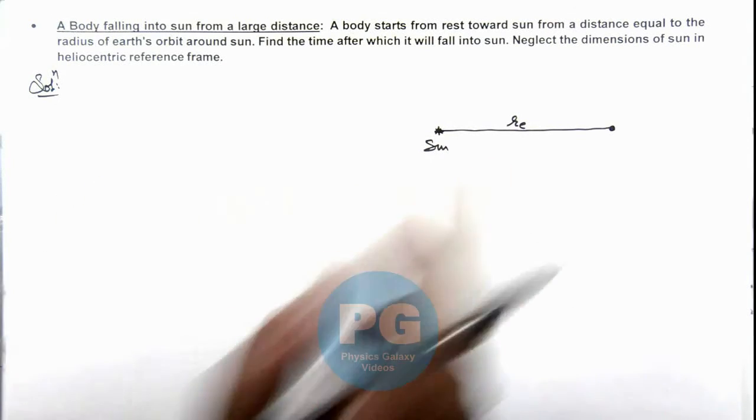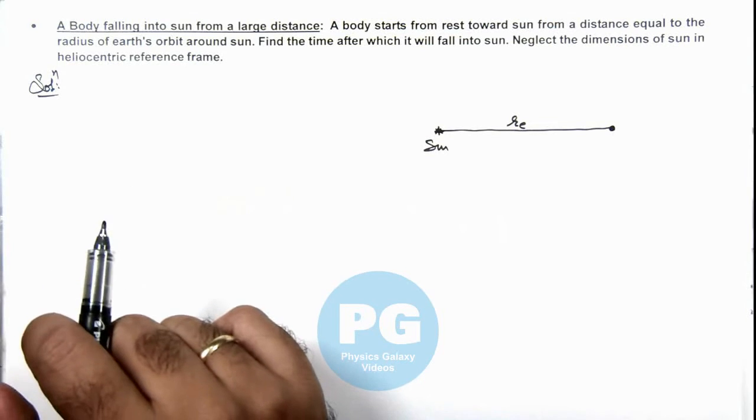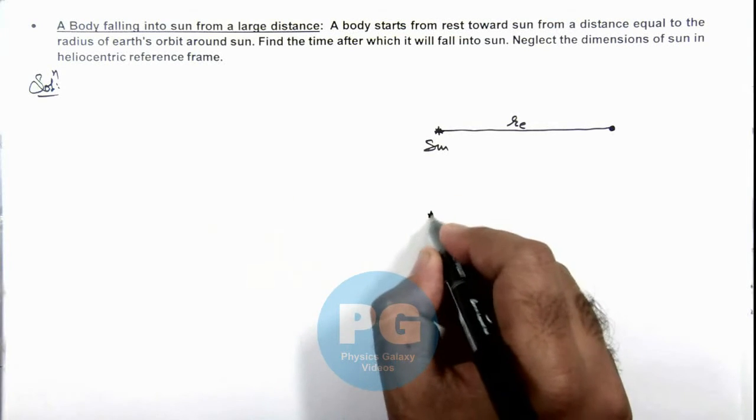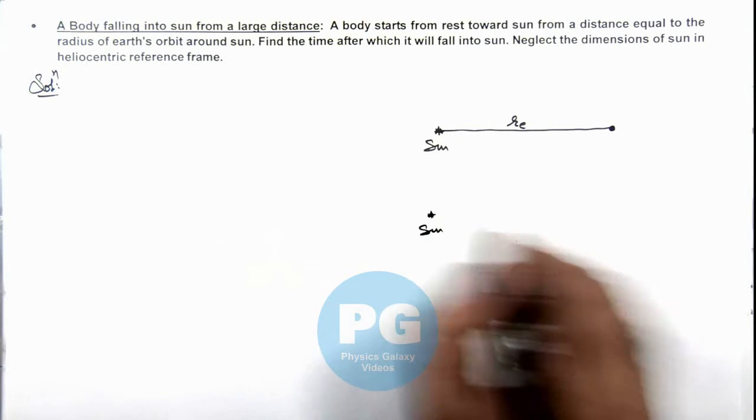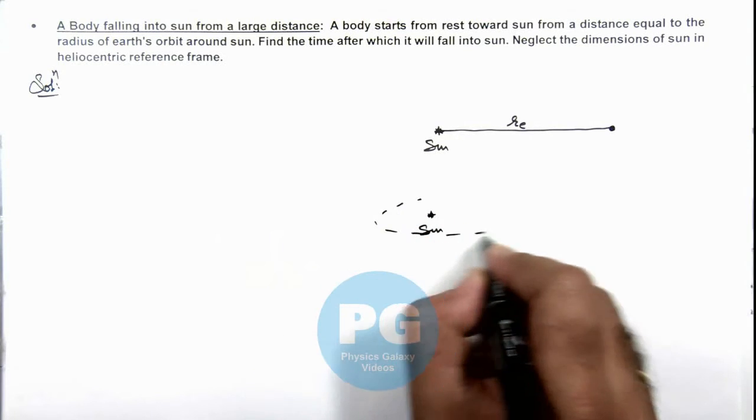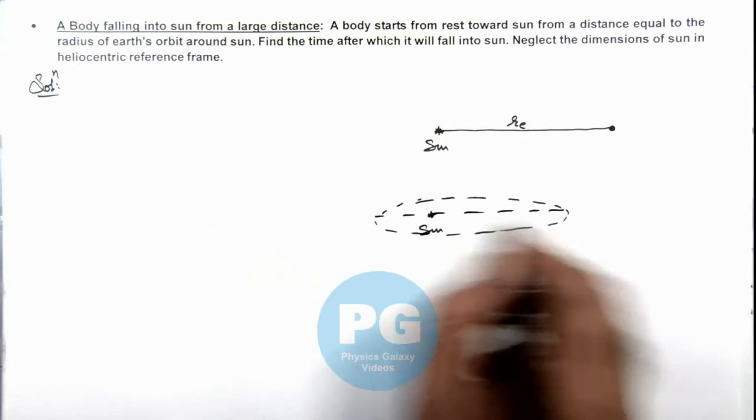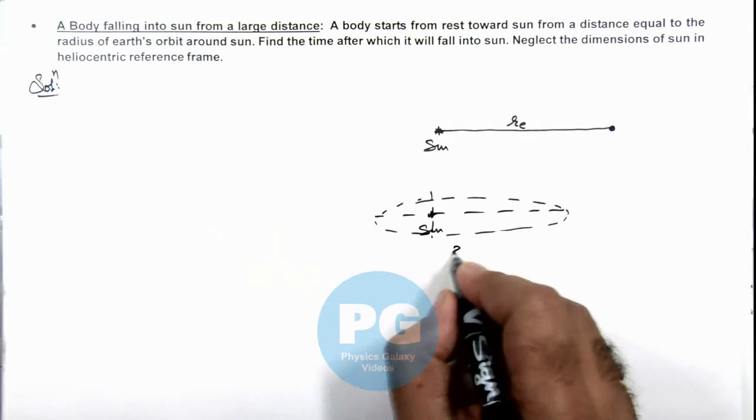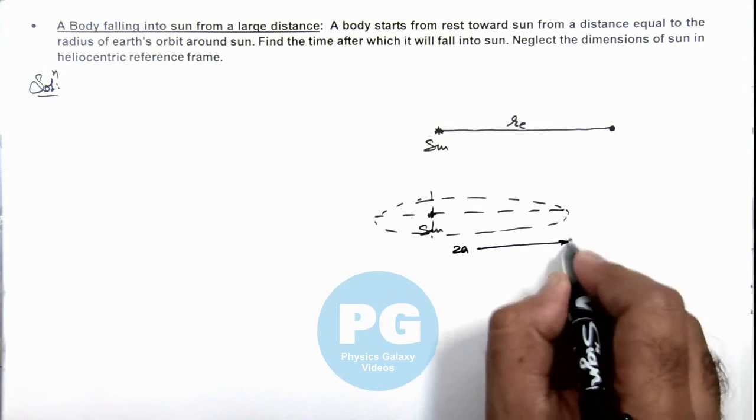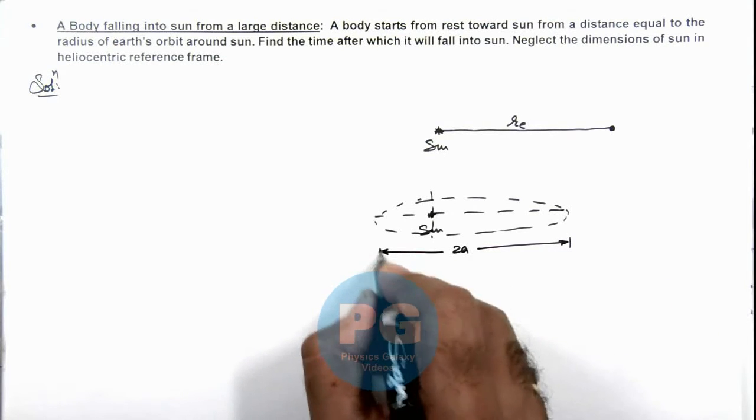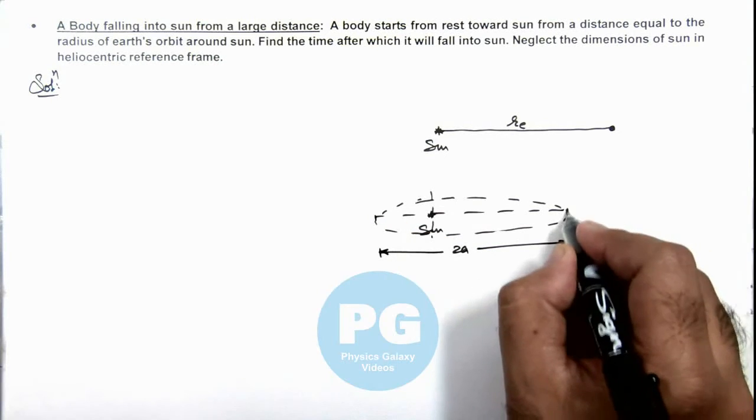But here we can use the concept of degenerated ellipse in which we can consider if sun is at rest and a body is revolving round it in an elliptical path. Then in this situation, if a body is revolving round it in elliptical path and if 2ay is the major axis.